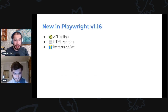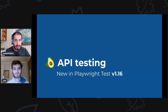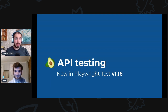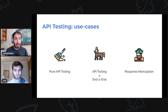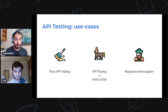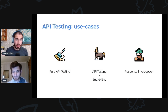We have a little bit of agenda, so let's jump right in to the first big topic: API testing. We already talked about API testing in the previous release, 1.15. This time, however, this feature is out of experimental — it used to be experimental, but it's stable now. There are three big use cases: pure API testing, a mix of API and end-to-end testing, and response interception.